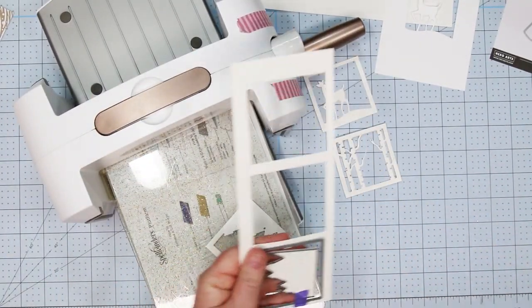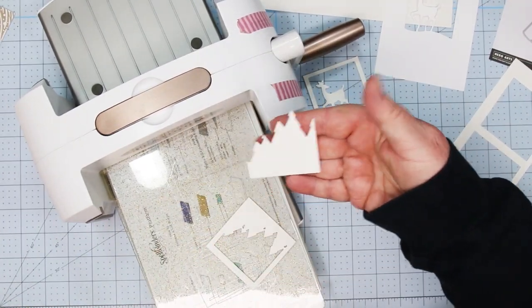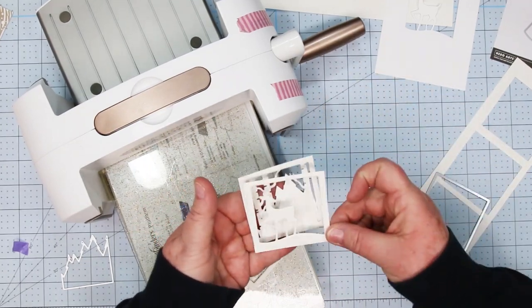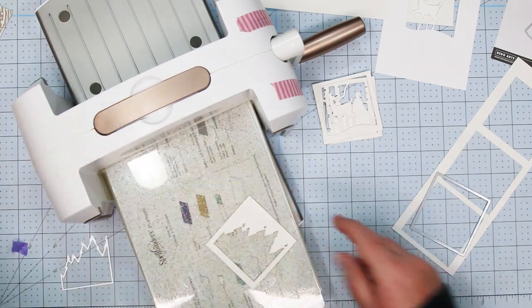And I want you to save both of the pieces because we're actually going to use the negative piece for the card that we're making today. Not the positive piece. Not the one that is shown in the diagram with the dies. So here's the piece we're going to use. And then the other piece is the one we're going to save for later. So see how tall the mountains are? The other piece, the mountains are really short.